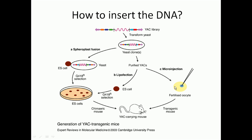The third method is microinjection: we take the fertilized oocyte and directly inject the desired gene — carried in the vector — into it. For microinjection you don't need the complete yeast clone; you only need the purified YAC. In contrast, spheroplast fusion requires both ES cells and the yeast clone because two cell types must fuse together. For lipofection, microporation, or microinjection, you only need the vector containing the gene of interest, which is then injected into the fertilized oocyte and implanted into the organism.